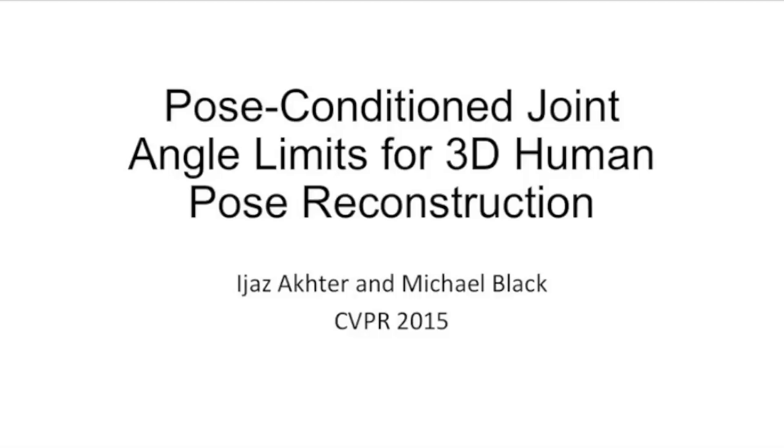We address the problem of estimating 3D human pose from corresponding 2D joint locations in an image. We propose pose-conditioned joint angle limits to solve this problem.